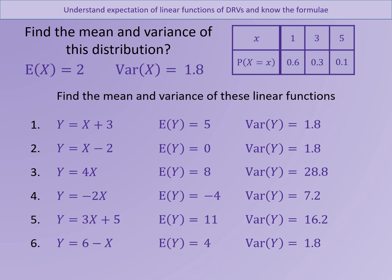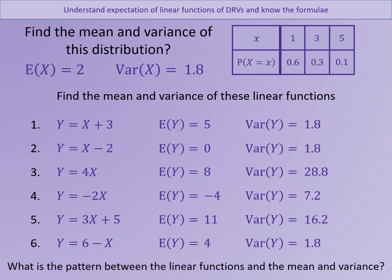Going back to the earlier examples to see if we can spot what's going on: for Y = X plus 3, A is 1 and B is 3. The expected value of Y is the expected value of X multiplied by 1, then add 3, giving 5. For the variance, we multiply by A squared, which is 1 squared, so 1.8 times 1 stays as 1.8.